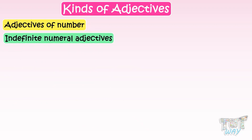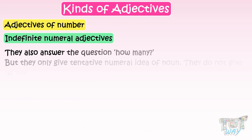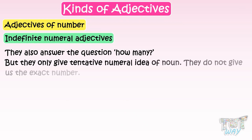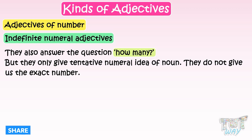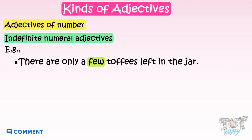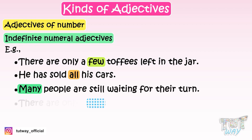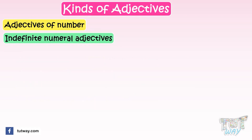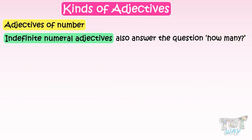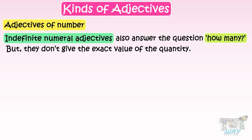Now let's learn what are Indefinite Numeral Adjectives. Like Definite Numeral Adjectives, they also answer the question how many, but they only give a tentative numeral idea of the noun — they do not give us the exact number. For example: There are only a few toffees left in the jar. He has sold all his cars. Many people are still waiting for their turn. There are only a few candies left. Indefinite Numeral Adjectives answer how many, but don't give the exact value of the quantity.